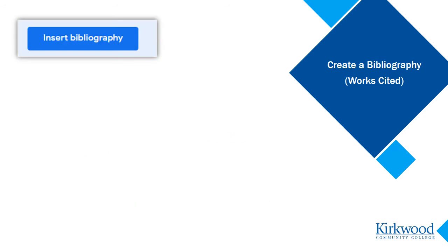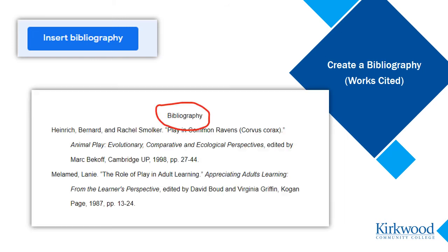Go back to your citation sidebar and click the Insert Bibliography button down at the very bottom. The complete list of citations will appear in your paper in alphabetical order and formatted with a hanging indent.